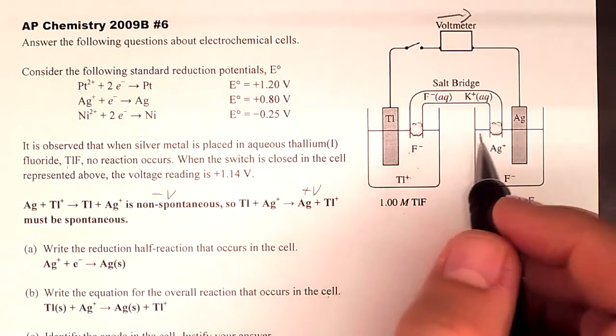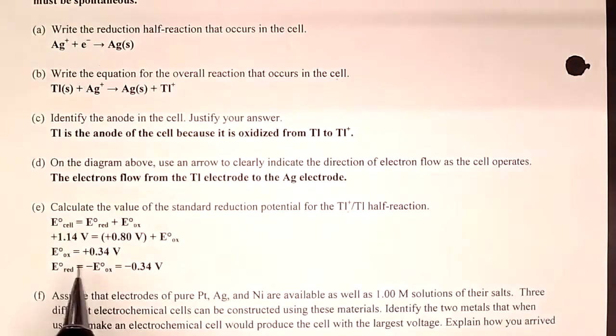Combining the oxidation and reduction half-reactions gives the overall net ionic reaction — the electrons cancel out. The anode is the source of electrons where mass decreases; electrons flow from the anode to the cathode, so current flows left to right once the switch is closed.